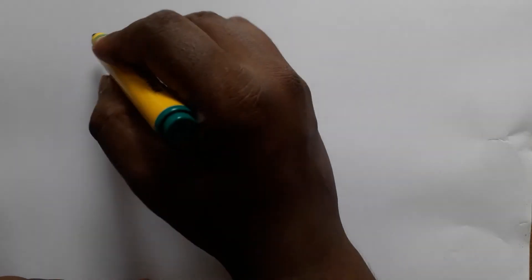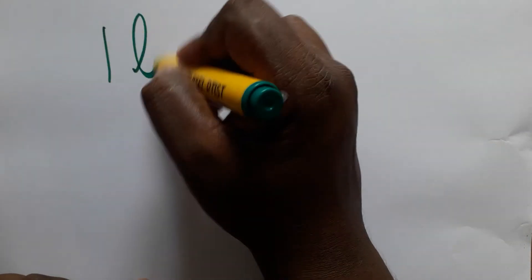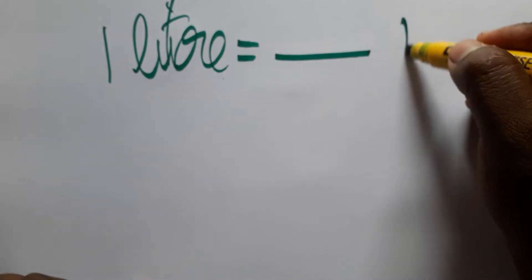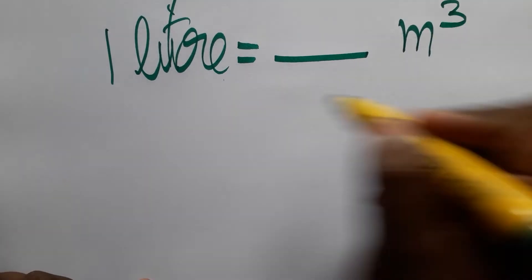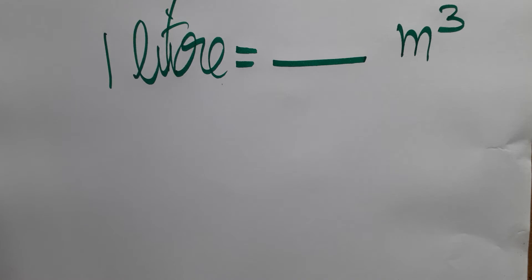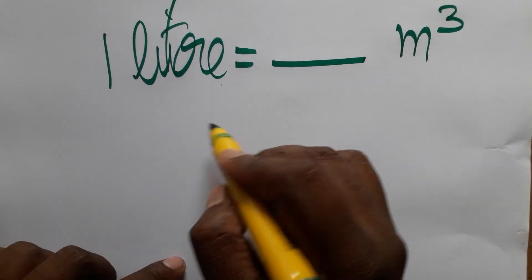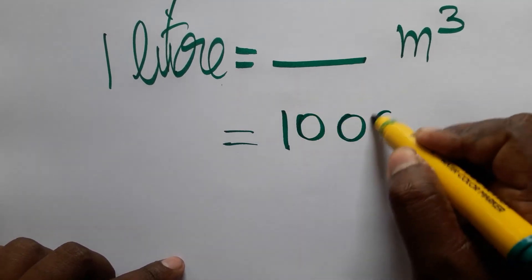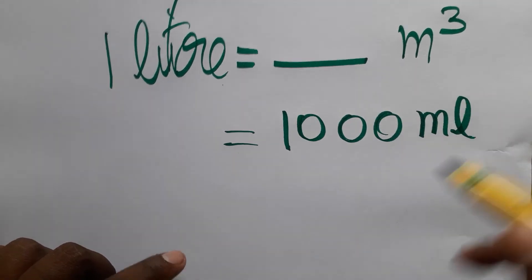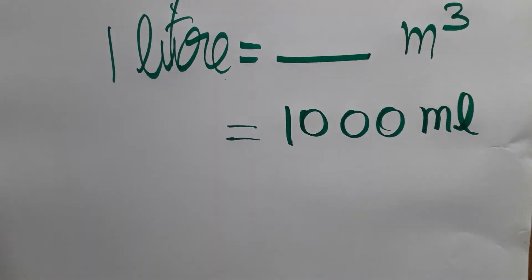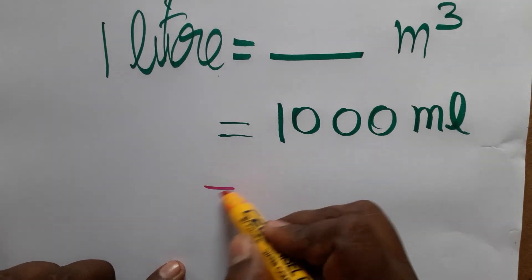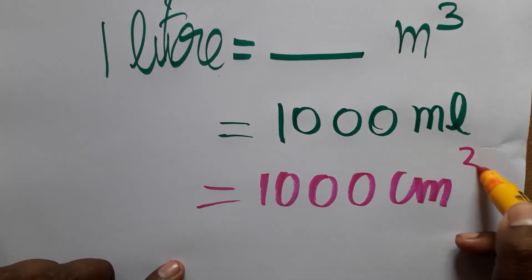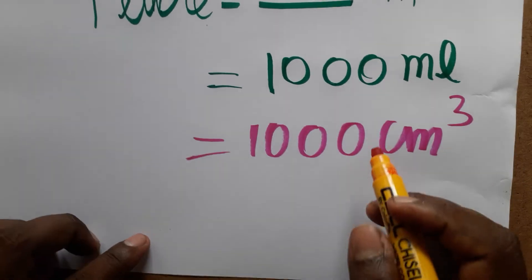In this video we are going to learn: one liter is equal to dash meter cube. We are going to find the volume of one liter. We know that one liter is equal to one thousand mL, and one mL is equal to one centimeter cubic (cc). So one liter equals one thousand centimeter cube.